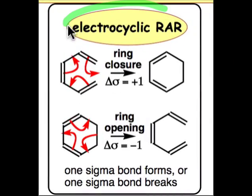On the left-hand side, we have examples of electrocyclic reactions. The top case is what's known as a ring closure. It takes a linear π system of alternating single and double bonds and makes a new ring out of it with an increase in the σ bond count by plus one.